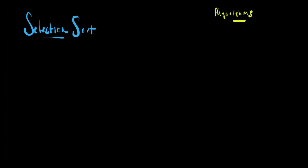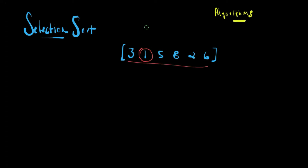We're going to do what we did in the first example: linear search to get the smallest number, and then we are going to swap that with the earliest value in the array, which is going to be three — this is the first one. So the outcome will be one, three, five, eight, two, and six.